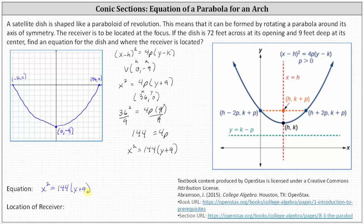And now to answer the second part of the question, recall the receiver is located at the focus. The absolute value of p gives us the distance from the vertex to the focus, or in our case just p because we know p is positive. So earlier we found 4p, now we need to find p. Using the equation 144 = 4p, we divide both sides by 4, which gives us p = 36.